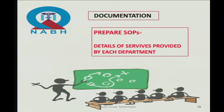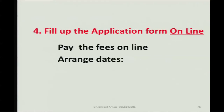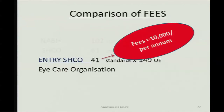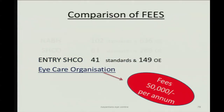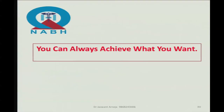SOPs should include details of services provided by each department. Continuous quality improvement is advised — collect, analyze, and take corrective actions on data such as patient satisfaction, vision achieved post-op, and incidence of infection and endophthalmitis. Based on outcomes, a self-assessment is done using a self-assessment toolkit. Fill up the application form online and pay the fees online. The entry to SHCO fees is just 10,000 rupees per annum, while eye care organization fees are 50,000 per annum.